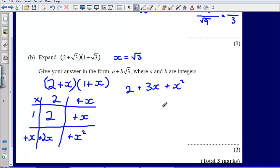So that's just made my expansion slightly easier. Now what I'm going to do is I'm going to substitute, I'm going to rename this x and put it back to what it was originally, root 3. So what I end up with is 2 plus 3 root 3, plus root 3 squared.